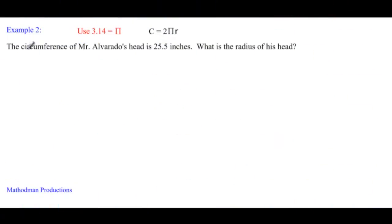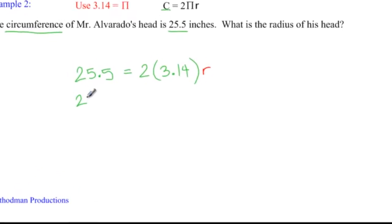In example two, the circumference of Mr. Alvarado's head is 25.5 inches. What is the radius? This time we're given different information to use in the formula. C we are given as 25.5. We're going to plug that in. Equals 2 times pi, 3.14. And this time we don't know what the radius is, so we're going to leave it as r.